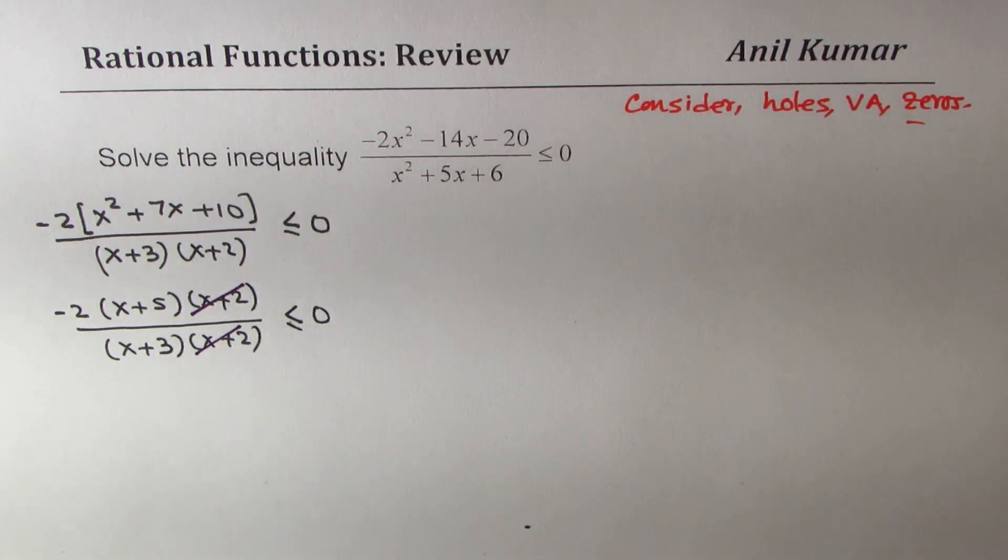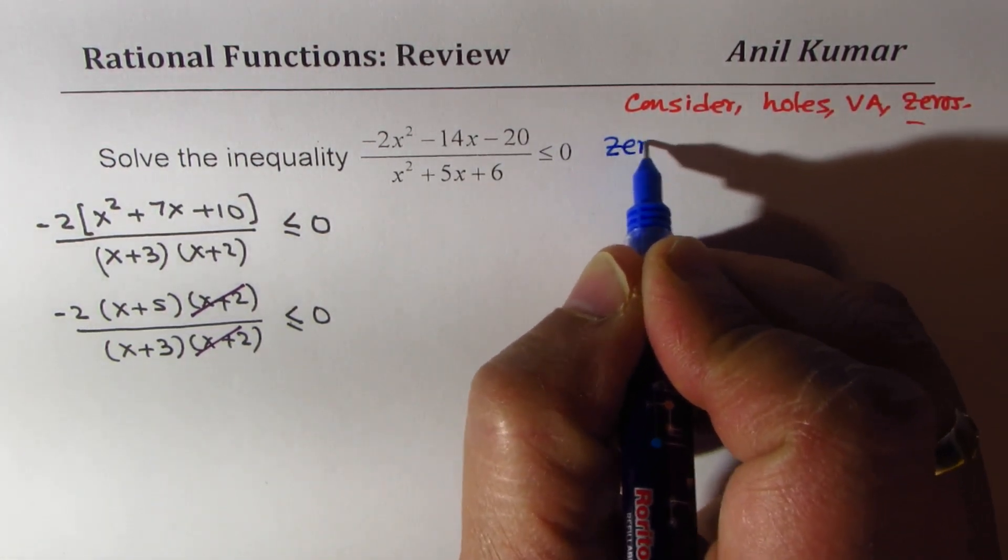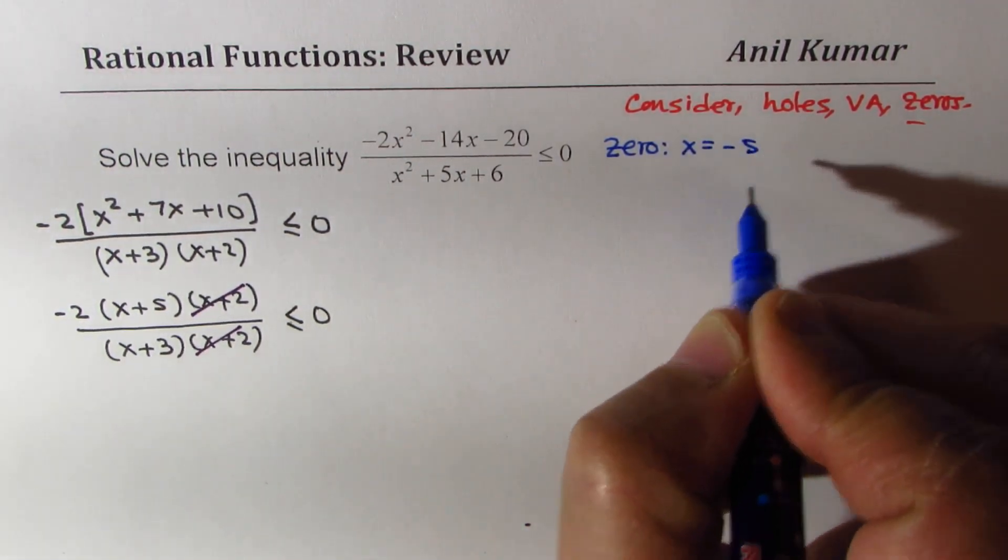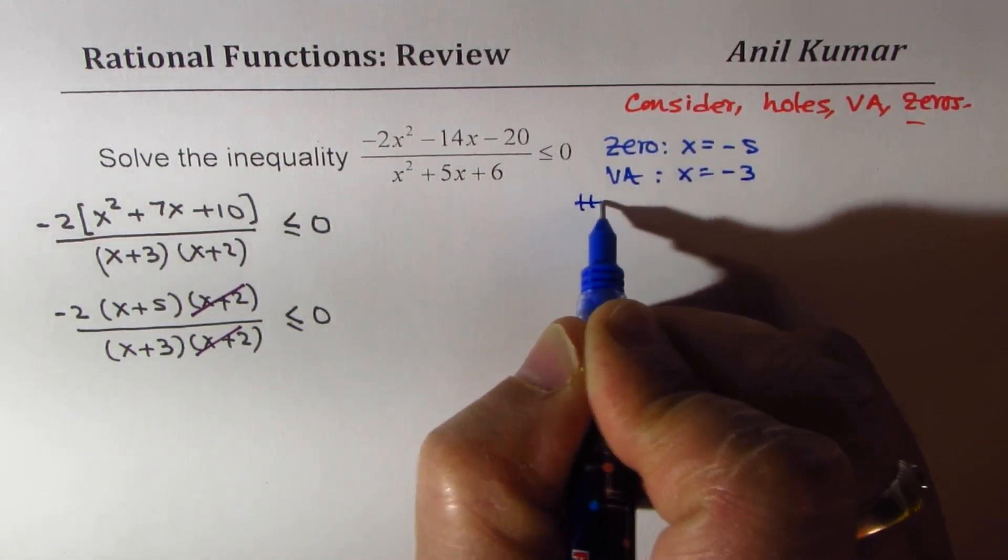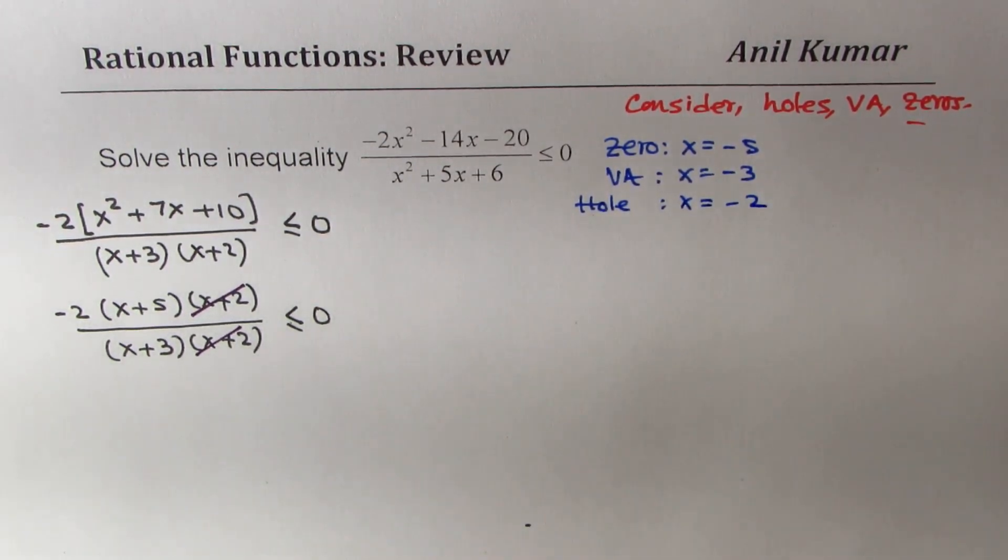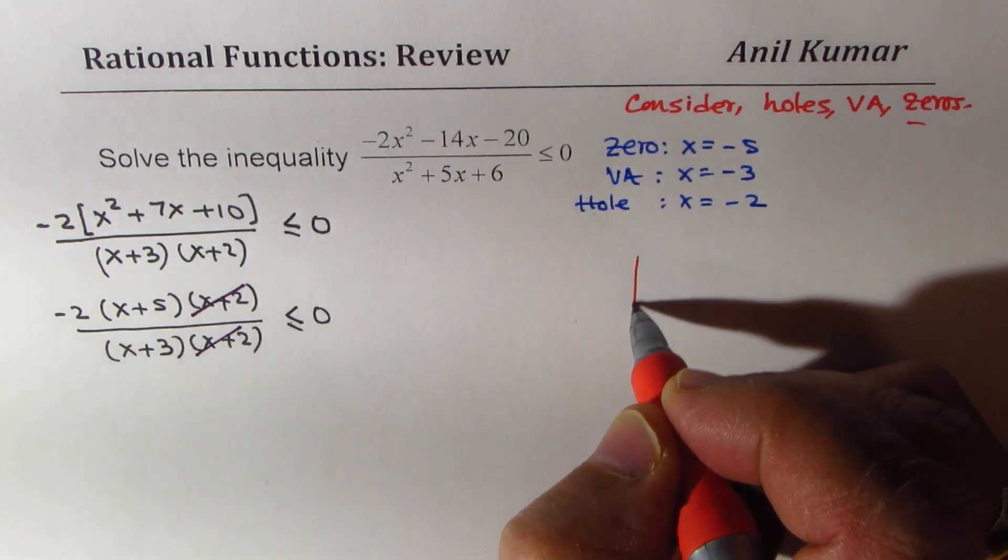So here we have zero at x equals to minus 5, vertical asymptote at x equals to minus 3 and hole at x equals to minus 2. So we are going to consider all these values to solve the inequalities. So let's make a table and then solve.